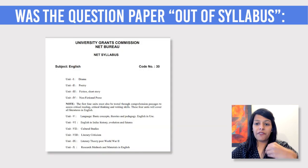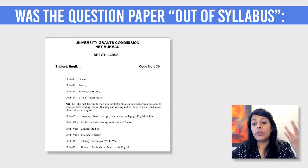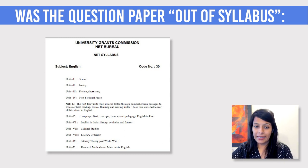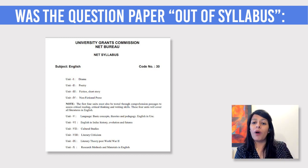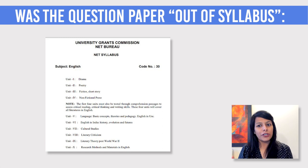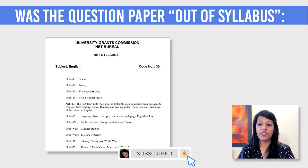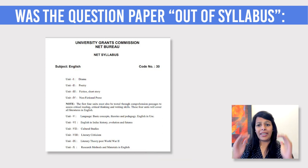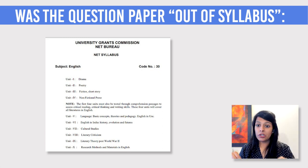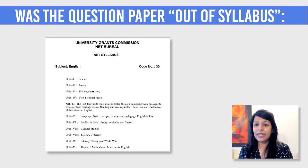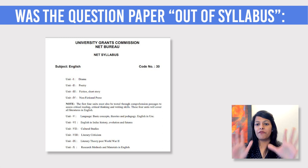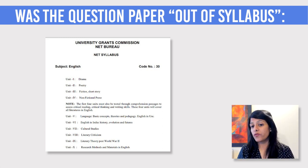Now let us finally go and talk about the question paper of Shift 1 UGC NET English. But if we want to understand the question paper and see whether it was from the syllabus or it was out of the syllabus, we need to first know the syllabus. If you look at the UGC NET syllabus on their official website, it just talks about 10 units — drama, poetry, fiction, non-fiction — and they have not given any specific topics that need to be studied in those units. So it's a very indicative syllabus and nobody can clear NET just by referring to that syllabus.